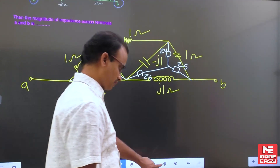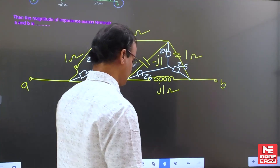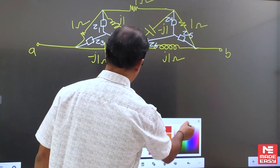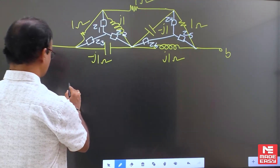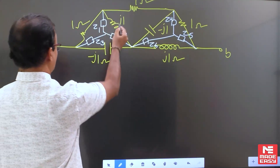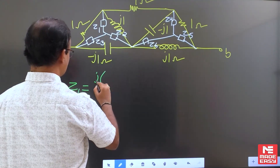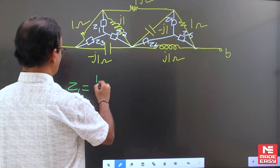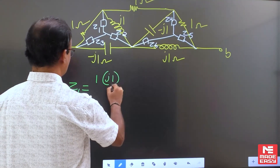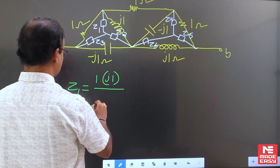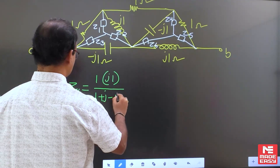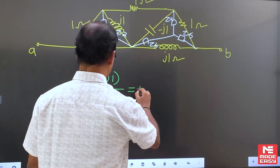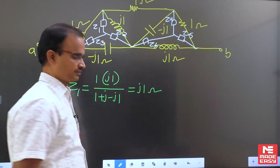Can you convert this star to an equivalent delta? If you write the respective steps, Z1 equals the product of adjacent sides divided by total impedance, which gives 1 times J1 divided by total impedance. If you simplify this, Z1 is equal to J1.